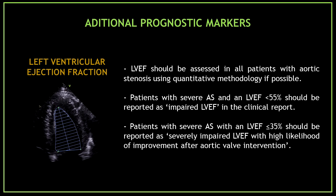When evaluating aortic stenosis, it's important to consider additional prognostic markers. The first is left ventricular ejection fraction, which should be assessed in all patients with aortic stenosis using quantitative methodology if possible. Patients with severe aortic stenosis and an ejection fraction less than 55% should be reported as impaired. Patients with severe aortic stenosis and an ejection fraction less than 35% should be reported as severely impaired LV dysfunction, with high likelihood of improvement after aortic valve intervention.